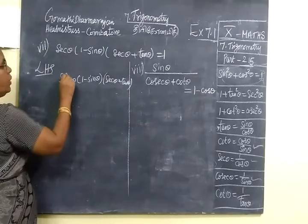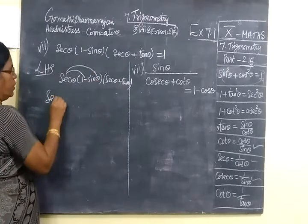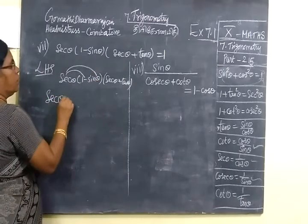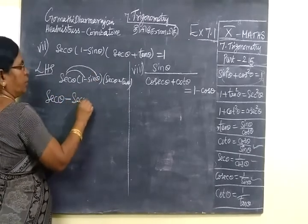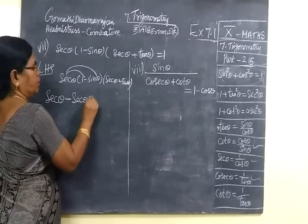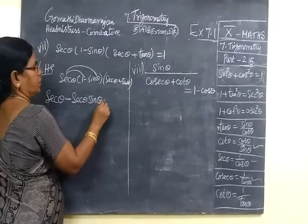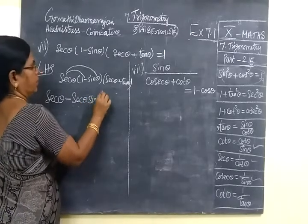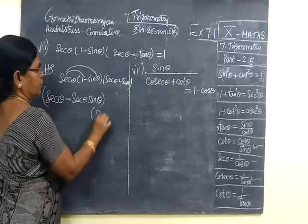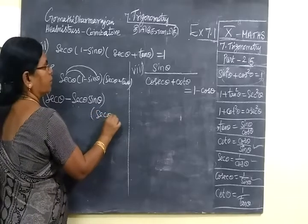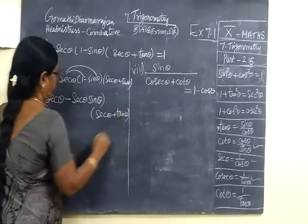Now take sec θ inside the bracket. So we get sec θ minus sec θ sin θ, then multiply by the bracket (sec θ + tan θ).